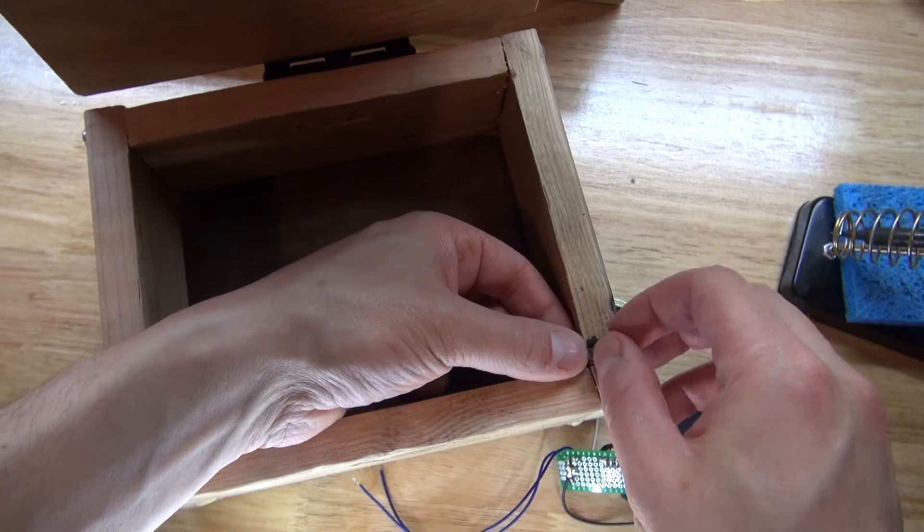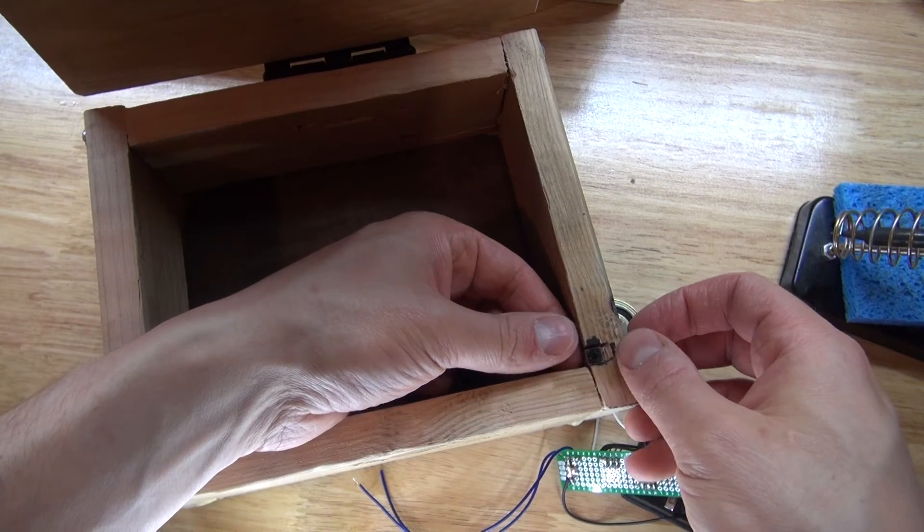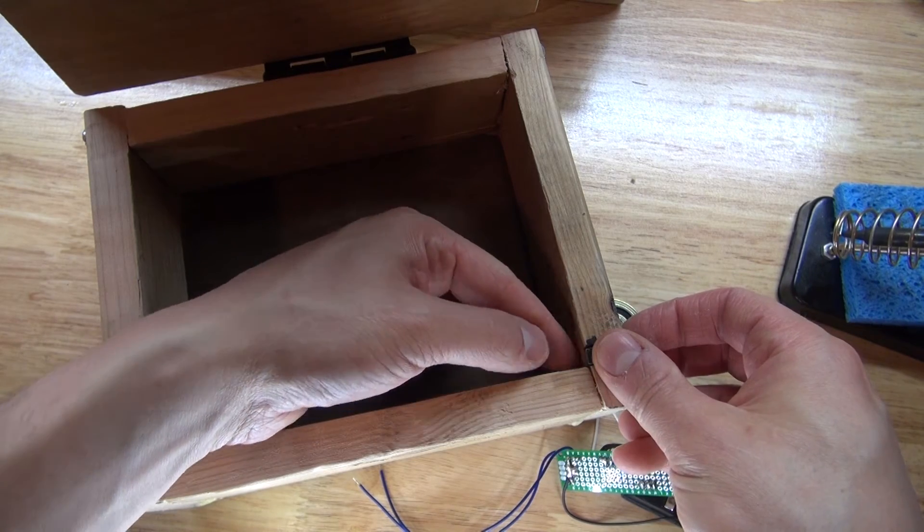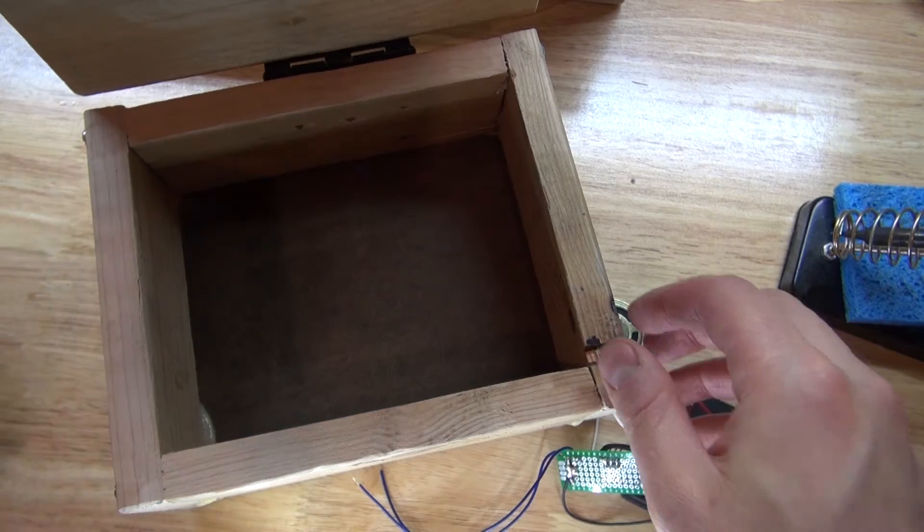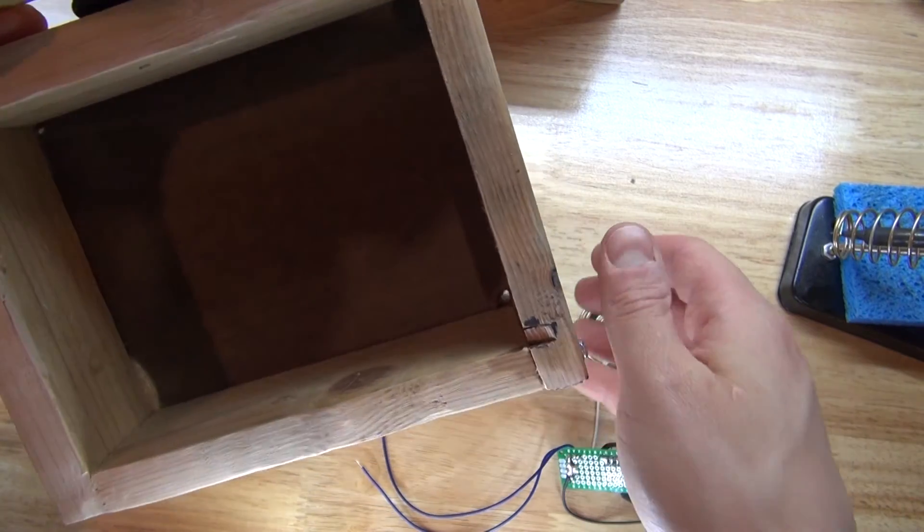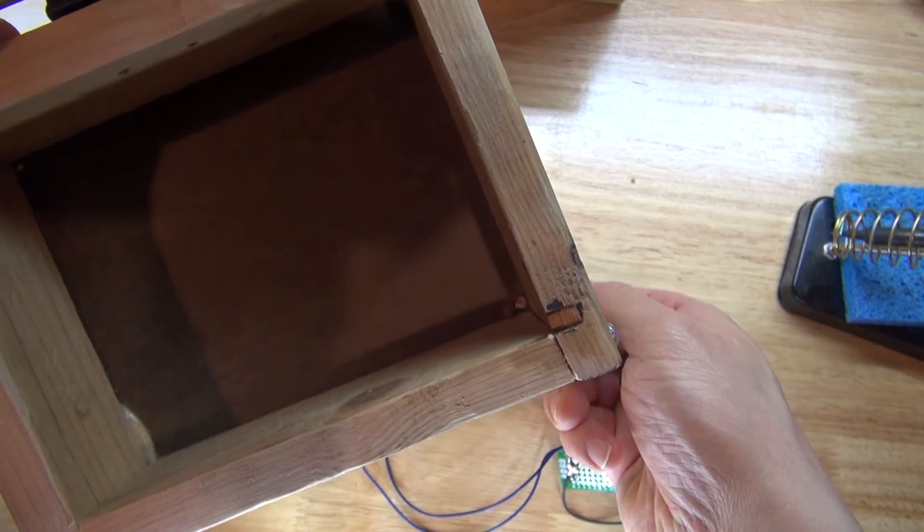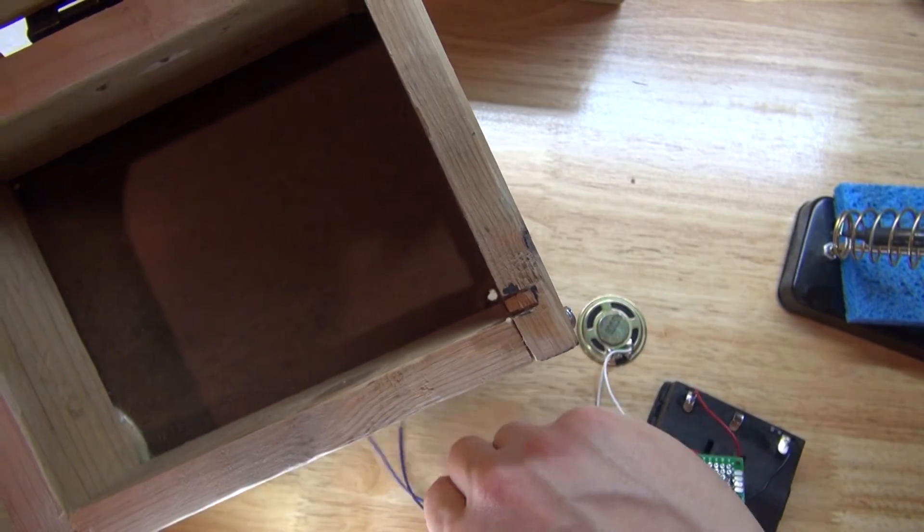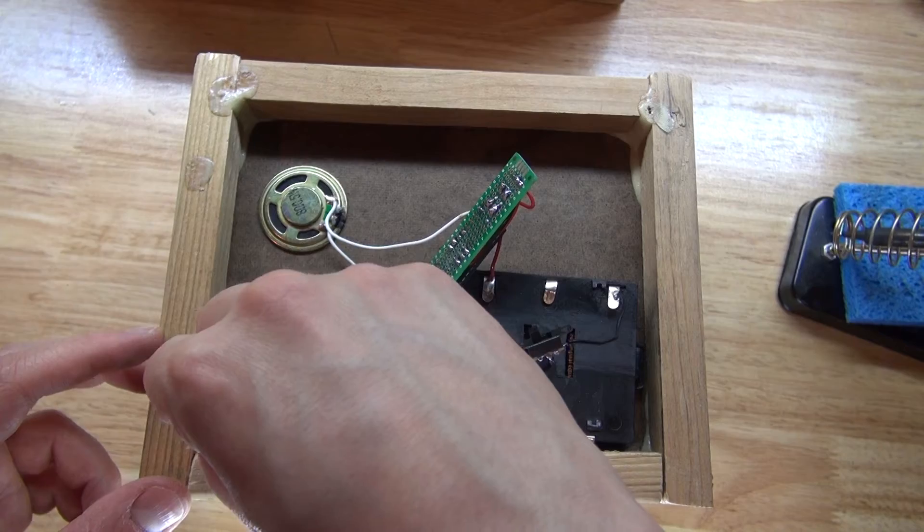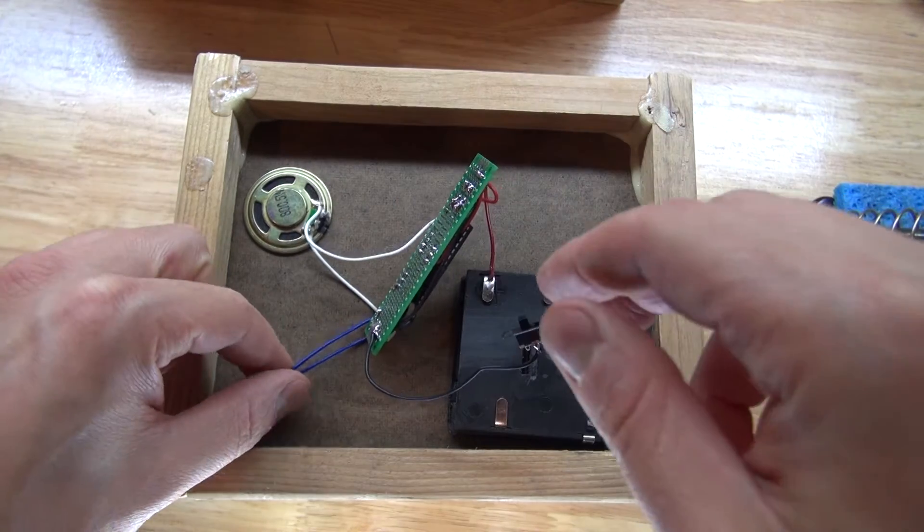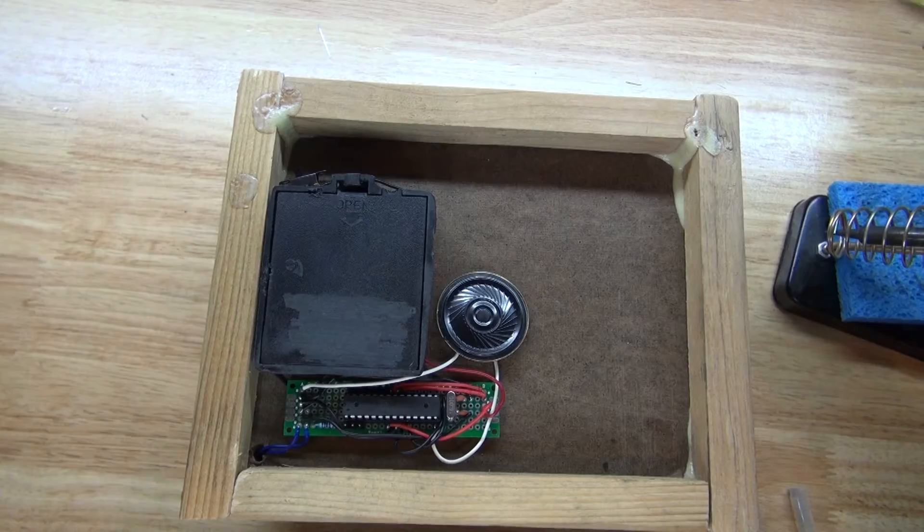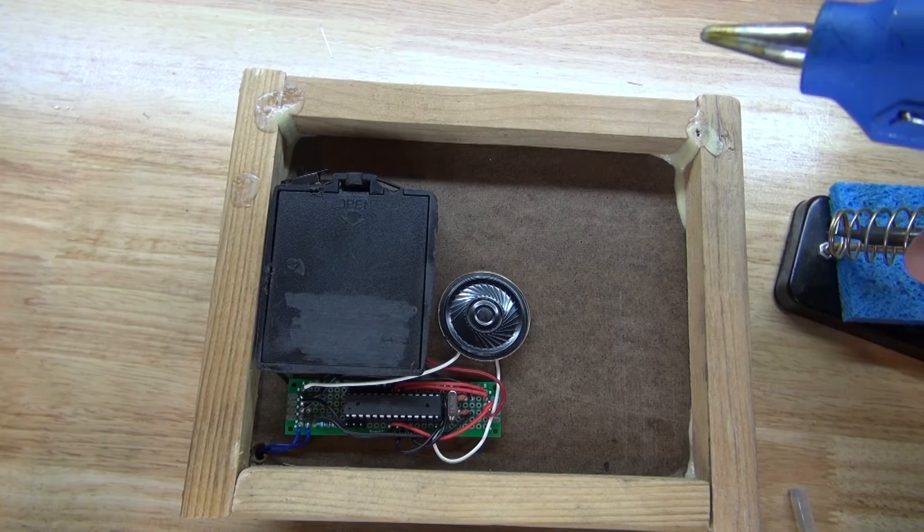Next, I want to take this push button switch, put it on the corner of the box. I want to run the wires down the corner of the box through this hole and connect it to the circuit. There we go. Just like this. Glue everything into place.